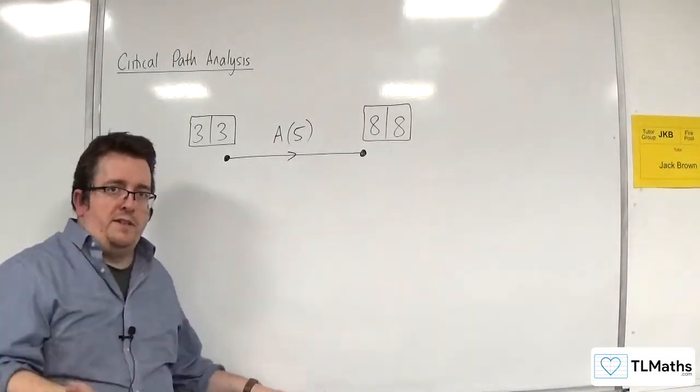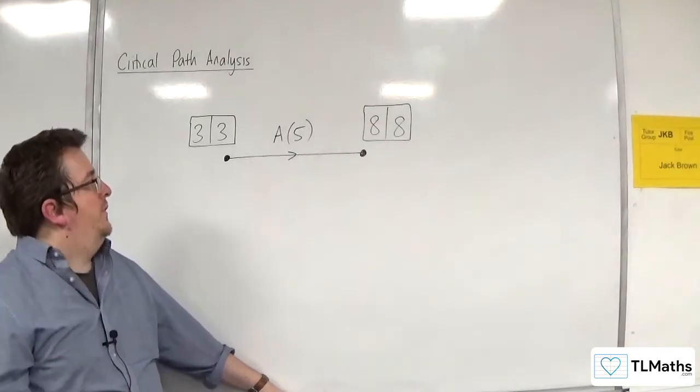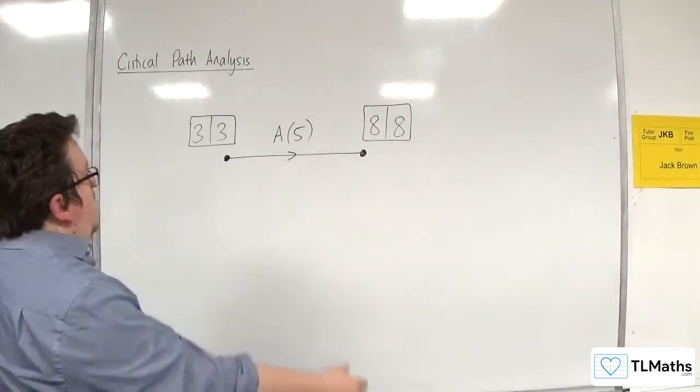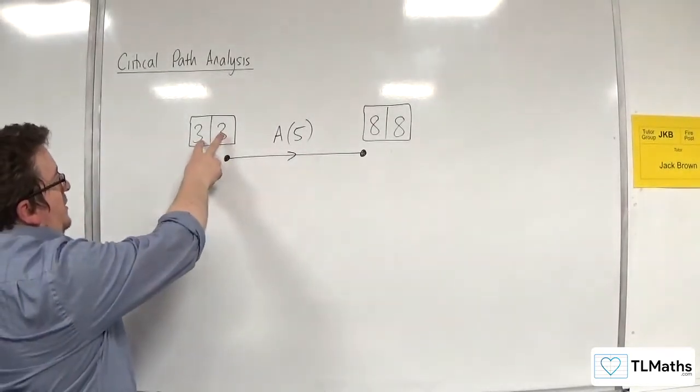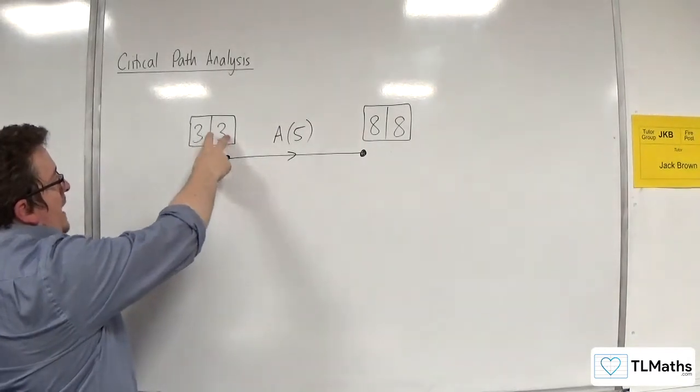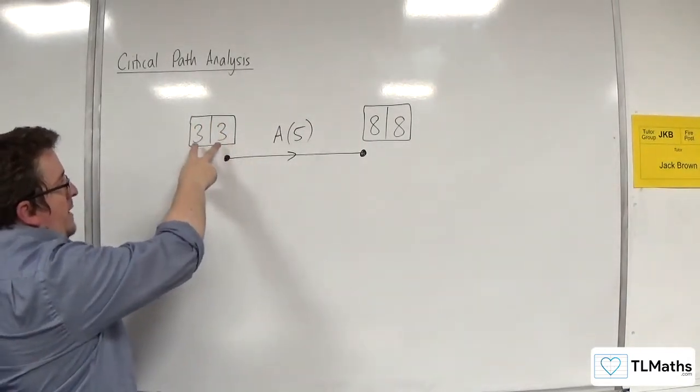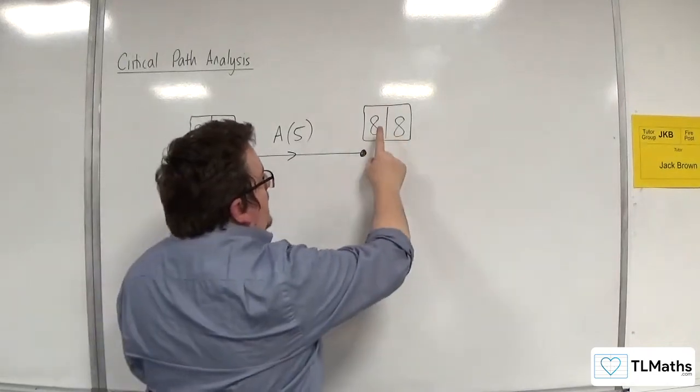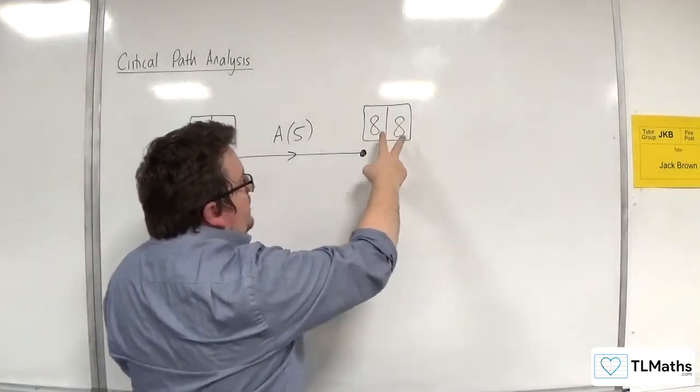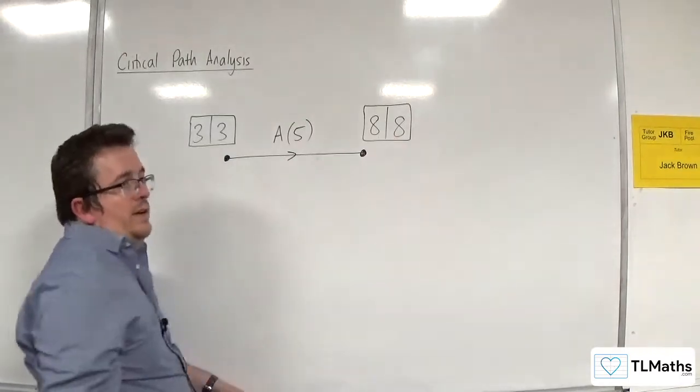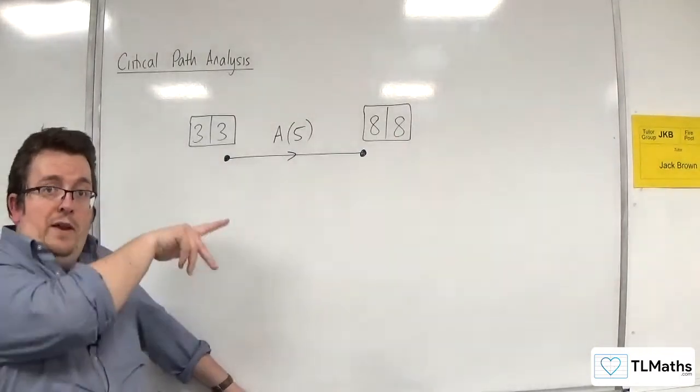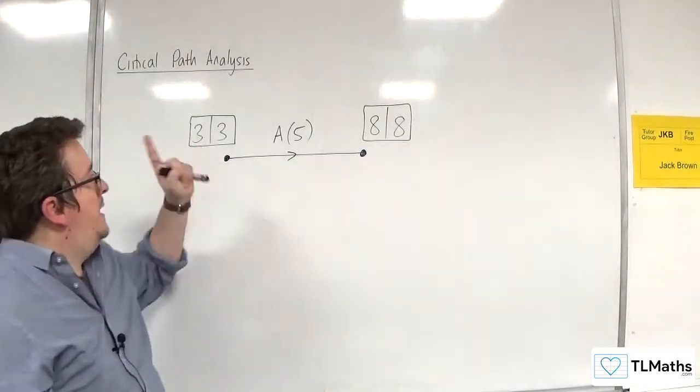So one of the defining characteristics of a critical activity is that the values, the early event time and the late event time at the start of the activity are the same. And the early event time and the late event time at the end of the activity are the same. So 3, 3 and 8, 8.